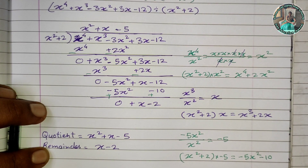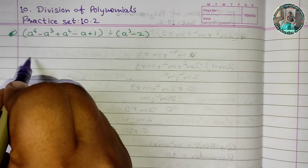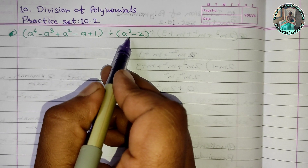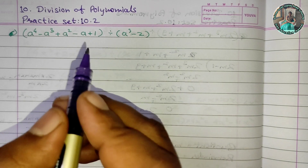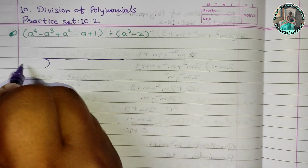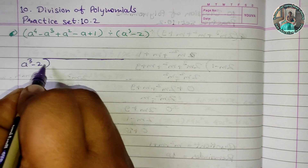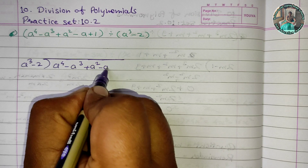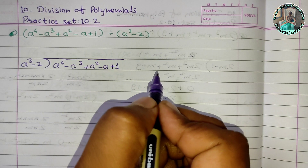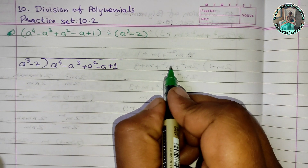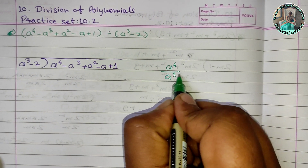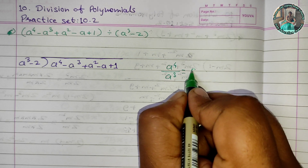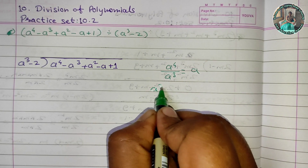Now the 6th question: a raised to 4 minus a cubed plus a squared minus a plus 1, divided by a cubed minus 2. We divide a raised to 4 by a cubed to get a. We multiply a into a cubed minus 2 to get a raised to 4 minus 2a.